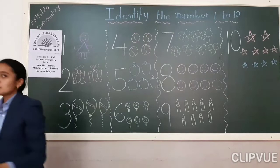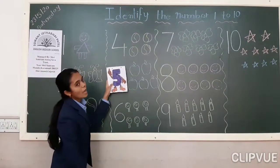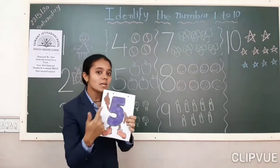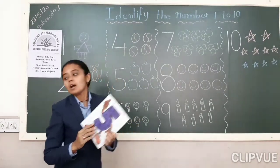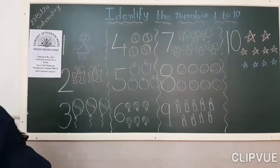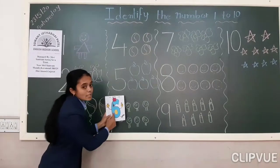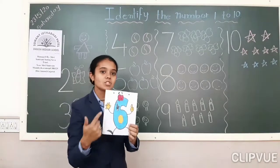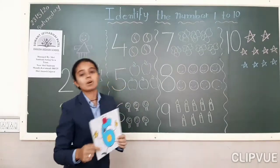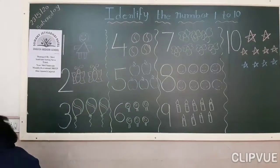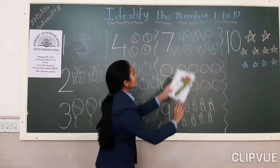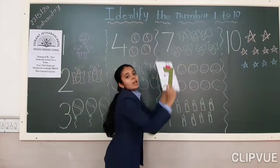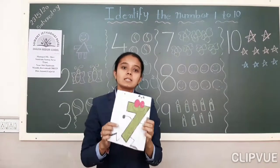After 4, which number will come? 5. Which number is this? 5. After 5, which number will come? 6 number. After 6, which number will come? 7. Which number is this? 7.